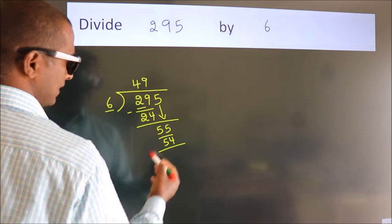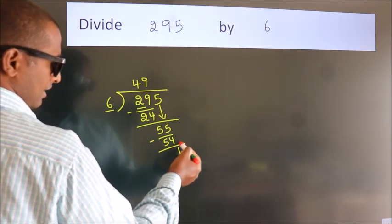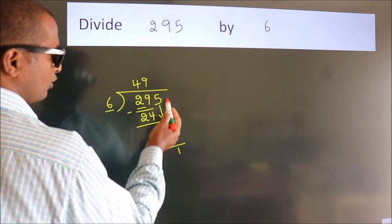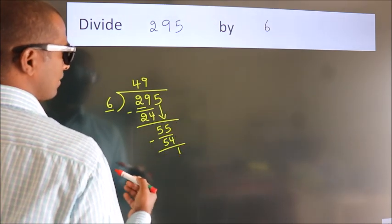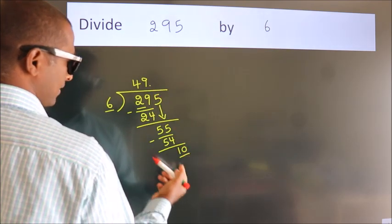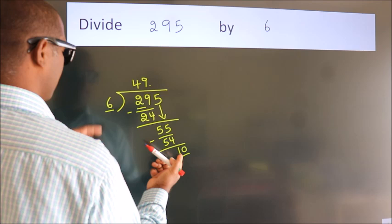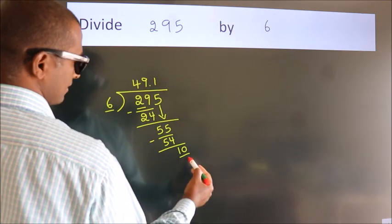Now we subtract. We get 1. After this, no more numbers to bring down. So what we do is put a dot and take 0. So 10. A number close to 10 in the 6 table is 6 ones, 6.